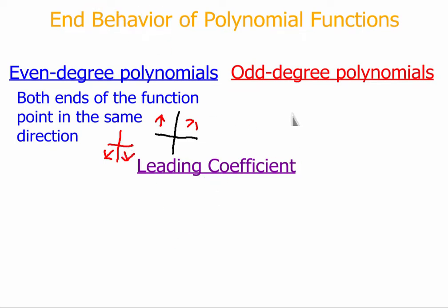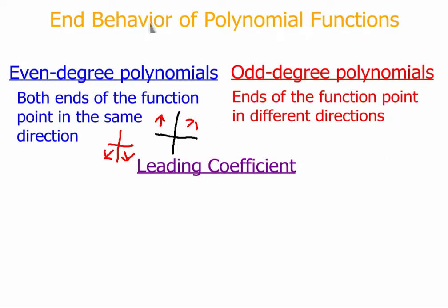With an odd degree polynomial, they're going to be pointing in different directions. If they're odd degree polynomials, the ends of the functions are either going to be one pointing up on the right and down on the left, or up on the left and down on the right. So even degree functions point in the same direction; odd degree functions point in different directions.